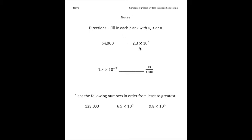So 2.3 times 10 to the fifth power means we're going to multiply 2.3 times 10 five times. I'm going to add some zeros for our placeholders, and now we need to move the decimal point over five spots — one, two, three, four, and five. I'll make the decimal red so you can see it even better. So that number is now 230,000. And 230,000 is greater than 64,000, so we're going to put the inequality like this.